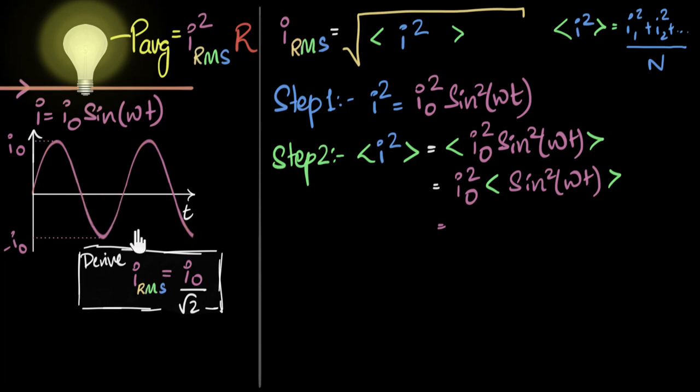But luckily, we're dealing with sinusoid. There's a logical way of figuring this out without any integral. Only works for specific functions. It'll work for signs. And I'm going to show you in a minute that if you calculate the average value, it turns out to be half.